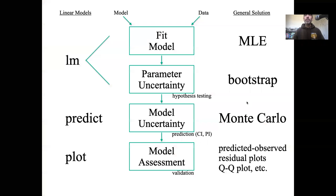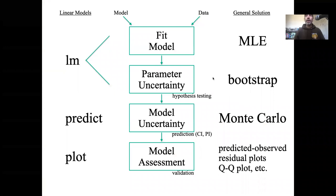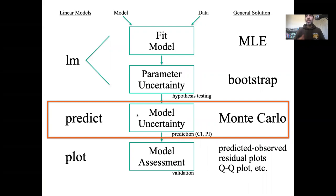In particular, coming back to the diagram that we talked about at the beginning of the last set of lectures, we spent last couple weeks talking about how we fit models via maximum likelihood estimation, how we estimate the uncertainties in the parameters associated with those best fit models using Bootstrap. And then this week, we're going to be talking about how we estimate the uncertainty around the model itself and predictions made with that model using Monte Carlo methods.